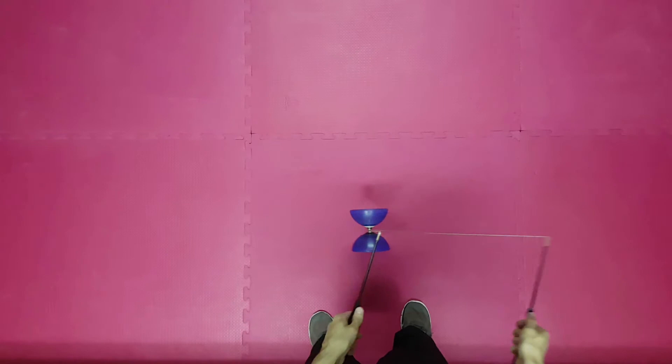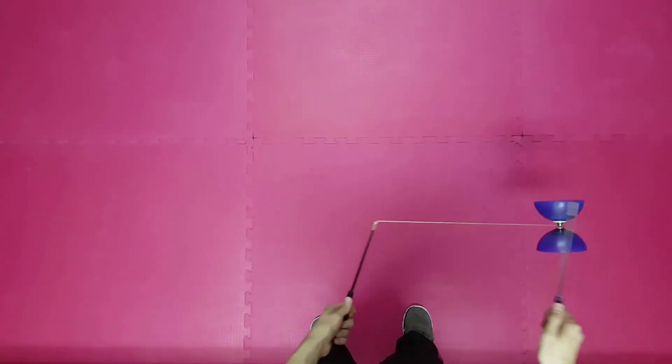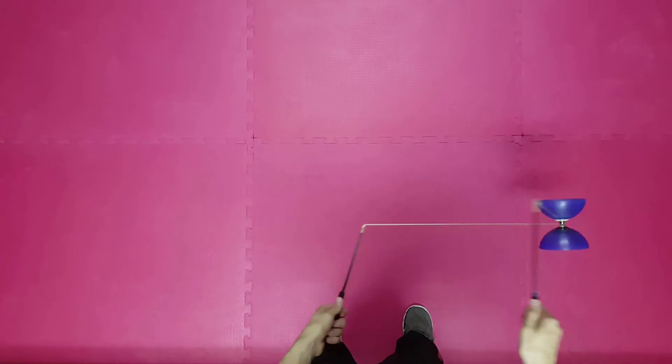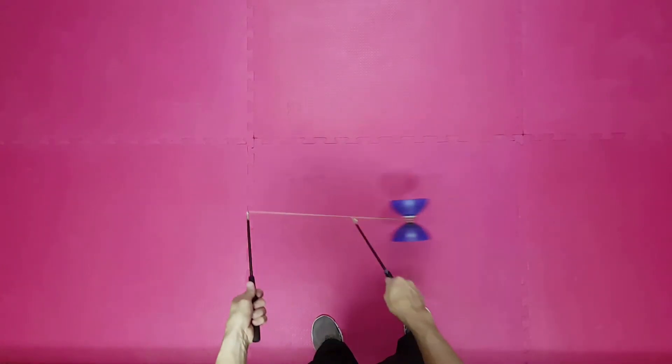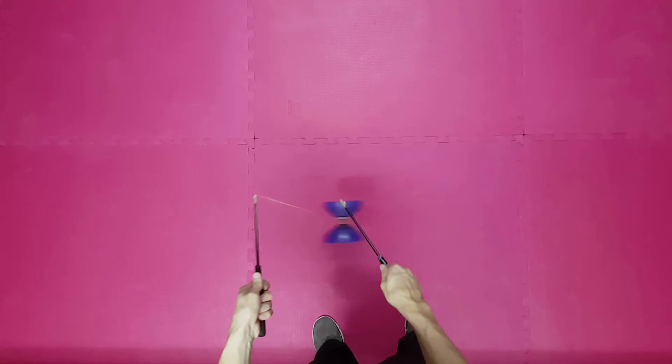We start the clockwise sun by collecting the momentum. The actual clockwise sun starts here. We swing our hands gently to the left side. The diabolo follows.